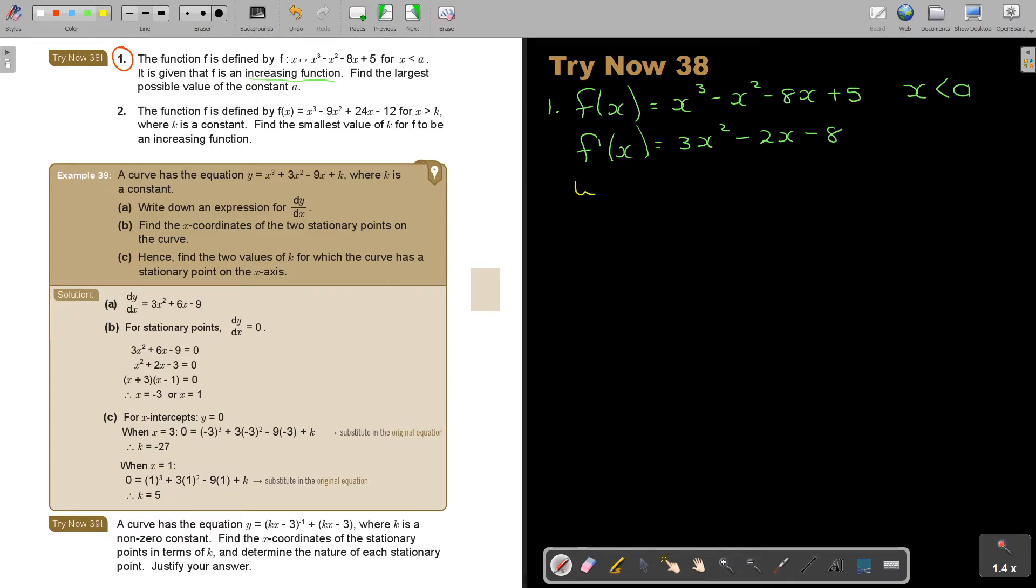So I'm saying when, this is, I just want to rewrite that. When y is increasing, the differentiated function must be bigger than zero. Decreasing smaller than zero. Increasing bigger than zero. So I'm going to say that 3x squared minus 2x minus 8 must be bigger than zero.